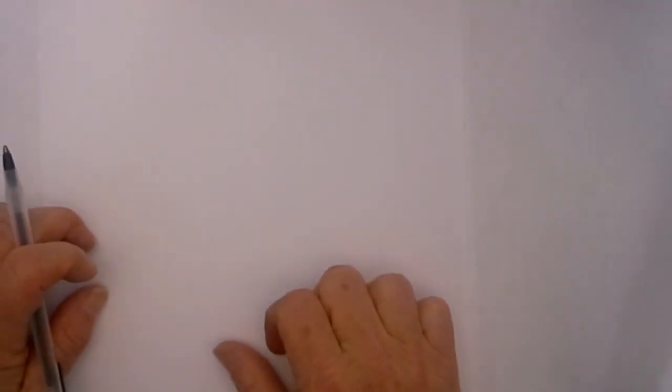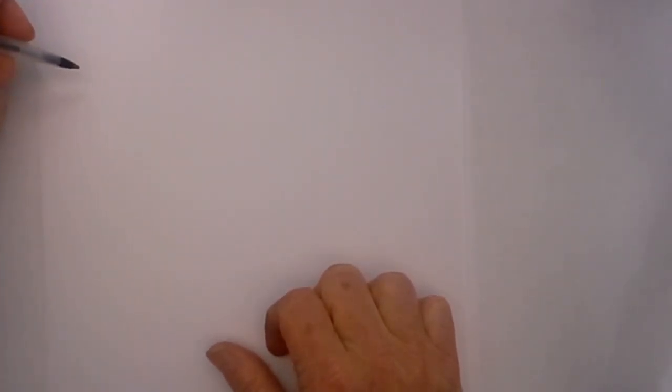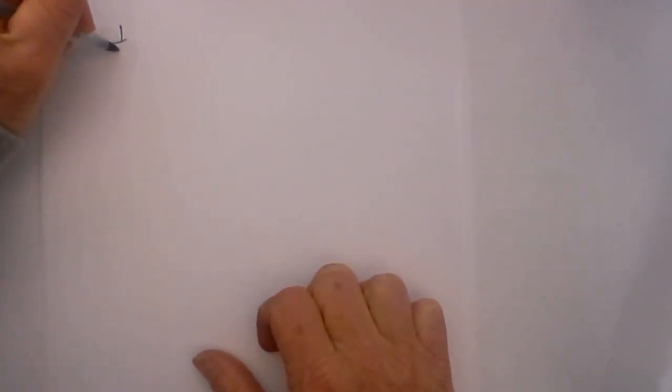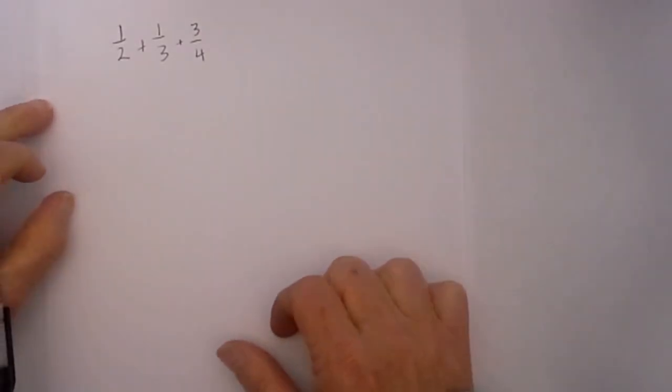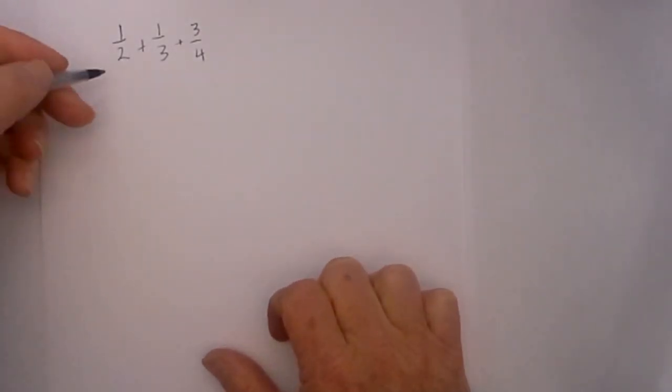Welcome to Moo Moo Math where we upload a new math video every day. In this video I would like to work on adding more than one fraction, in particular adding three fractions. Say for instance you have one half plus one third plus three fourths. So we will start with one that is fairly easy. I line them up in a vertical line: one half plus one third plus three fourths.